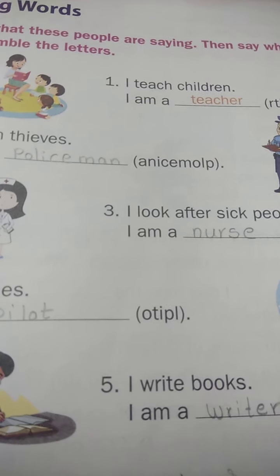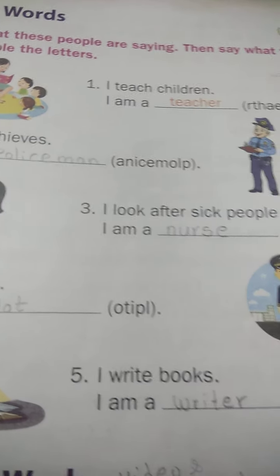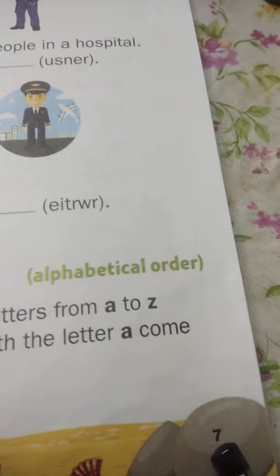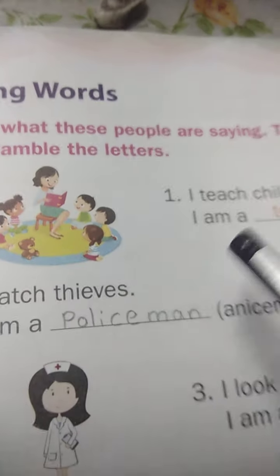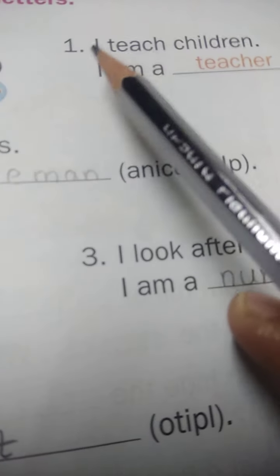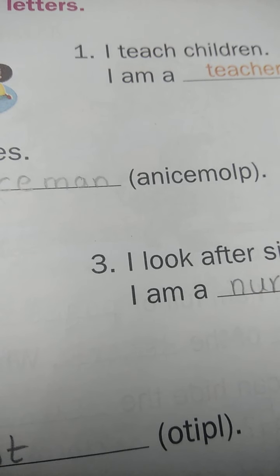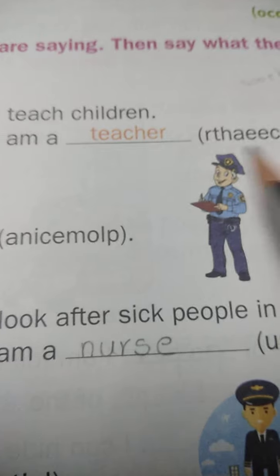Good morning, children. This is a term book, page number 7. Look at these sentences. Read these sentences, then say what they do. Unscramble the letters.